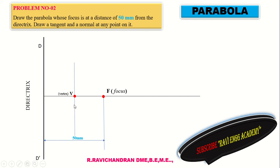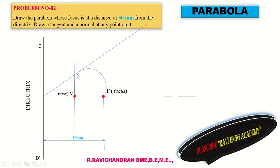Next step: take the compass point at the vertex. Set the compass to BF distance and draw an arc from the vertex line. Mark the arc intersection points on the vertex line. These are the initial construction points for plotting the parabola.